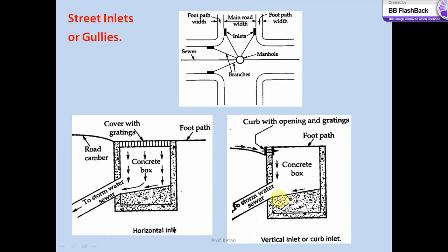Another appurtenance is known as a street inlet, also known as gullies. They are openings on a road surface at a lower point for draining rain water from the roads and admitting it into the underground sewers. These inlets are located along the roadside or on a straight road generally at intervals of 30 to 60 meters. They may be provided with a cover with a grating at the top in a horizontal arrangement or a vertical arrangement. Storm water collected into the street inlet or gullies then flows through the storm water sewer to the main storm water sewers or combined sewers.